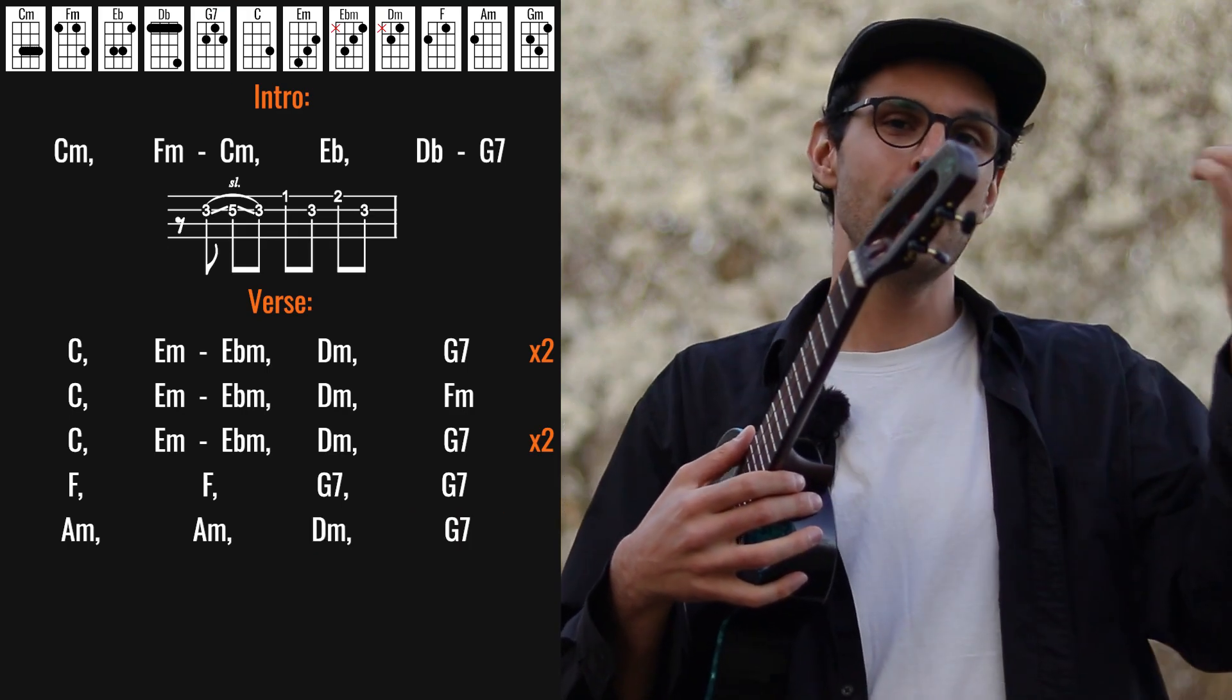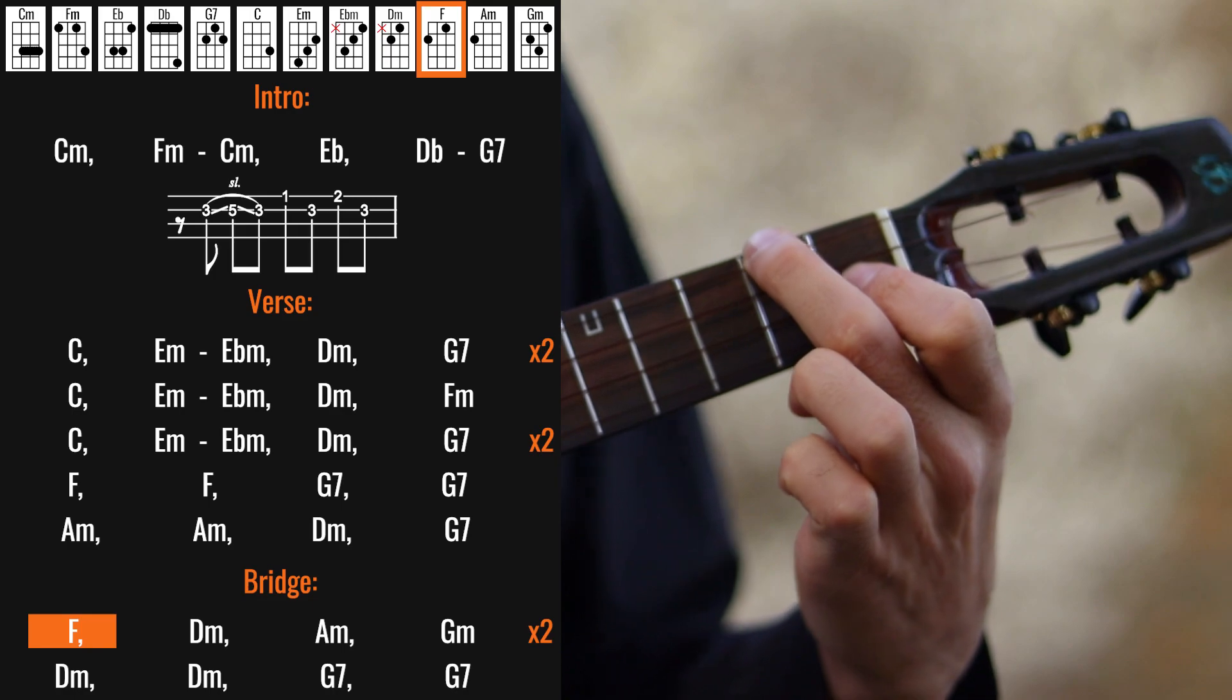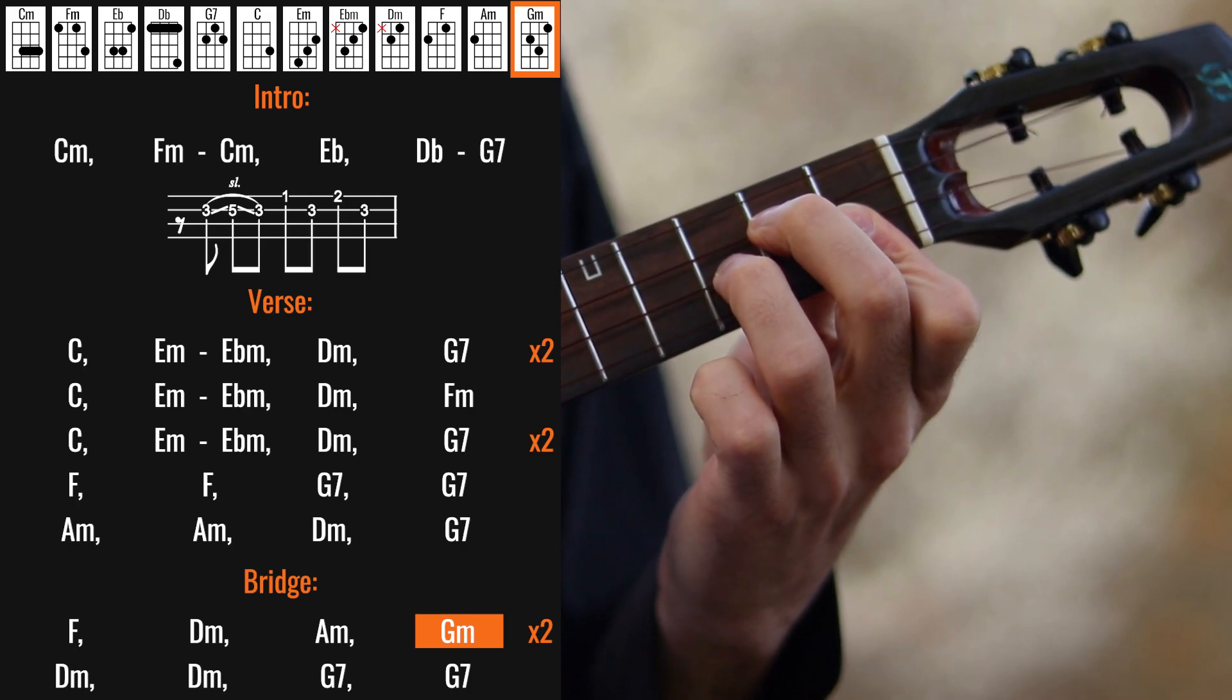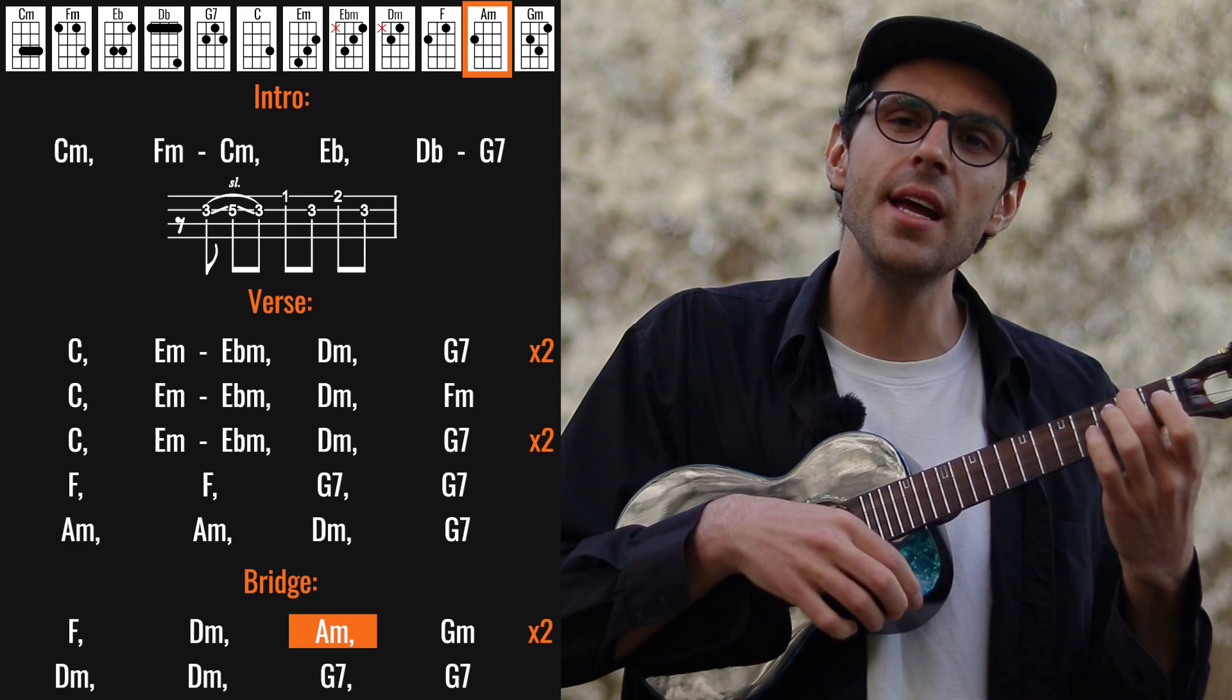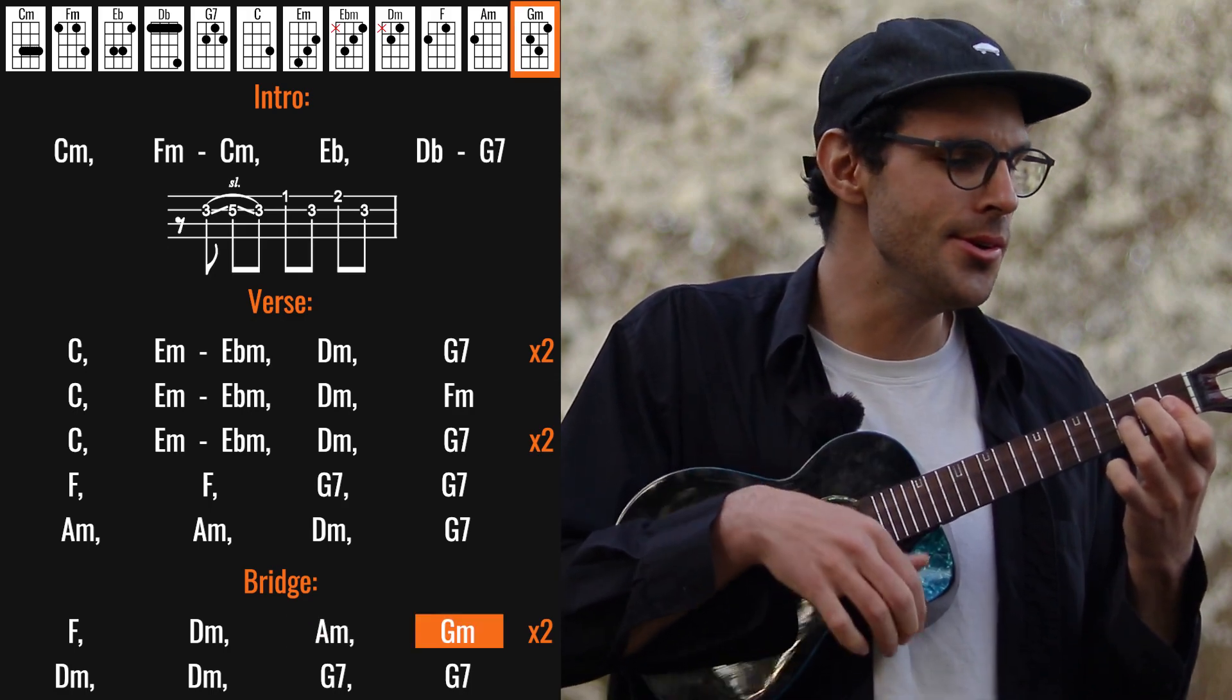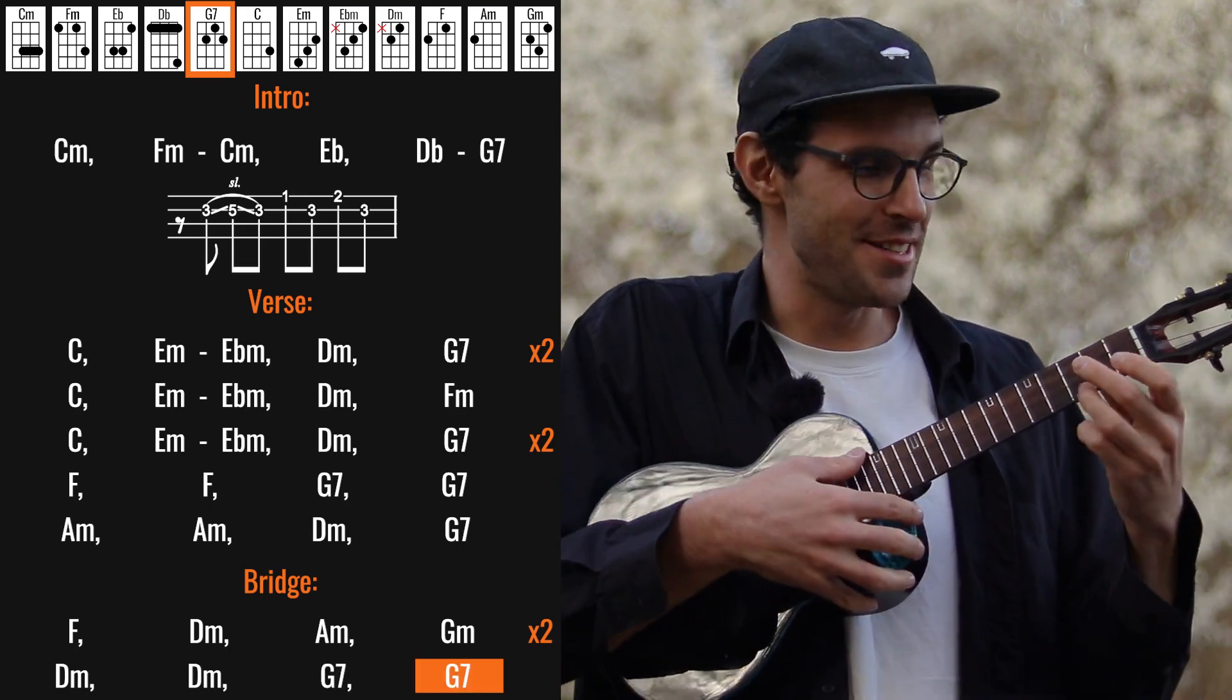I'm in love with you. And after that we basically repeat the same verse one more time, and then we have the bridge which starts like this: F to D minor, to A minor, to G minor. And we repeat this two times. And then D minor, and we get back to the verse.